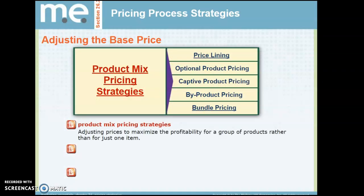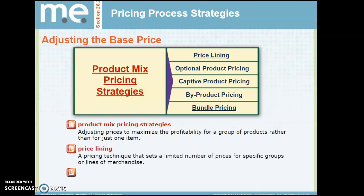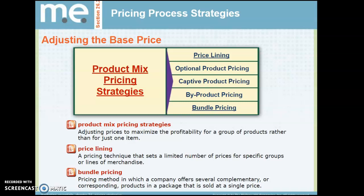Product mix pricing strategies involve adjusting prices to maximize profitability for a group of products rather than just one item. Price lining is a technique that sets a limited number of prices for specific groups or lines of merchandise. Bundle pricing is when a company offers several complementary or corresponding products in a package sold at a single price — for example, a shampoo and conditioner bundled together at one price.